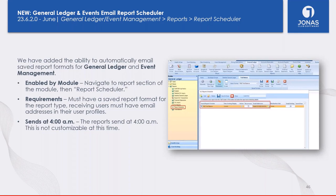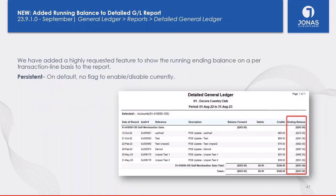Reports currently automatically send at 4 a.m. — this is not customizable at this time, but every day at 4 a.m. any reports you have scheduled to email will be sent. Another highly requested feature: for the Detailed General Ledger Report, we've added a column showing the running ending balance on a per-transaction line basis. Before it showed credits, debits, and totals at the end of the period; now every row shows the running ending balance as it goes.